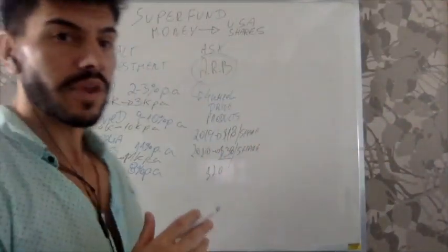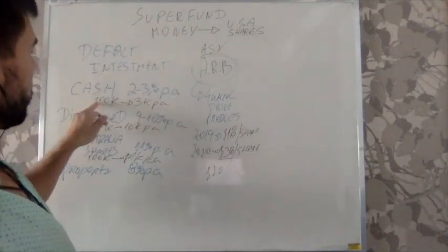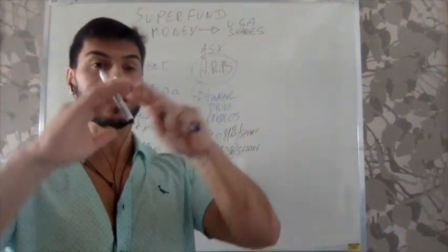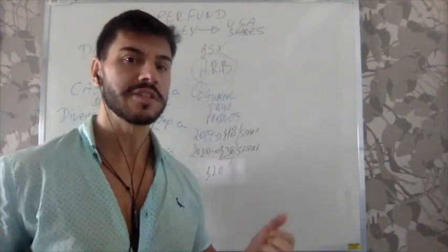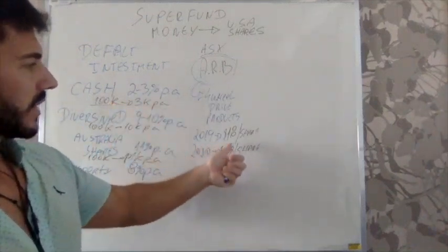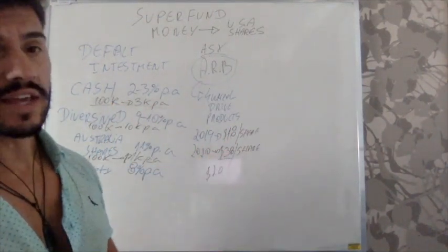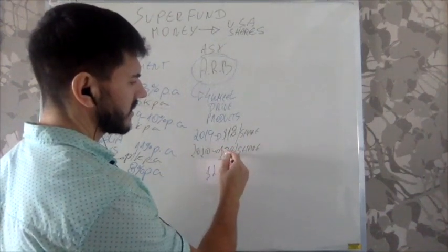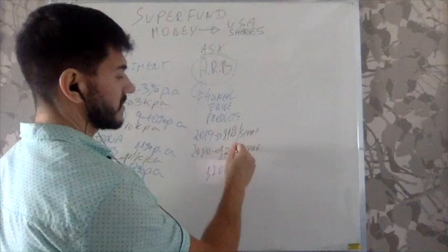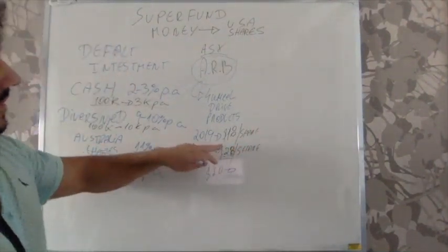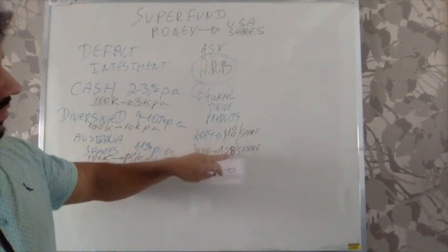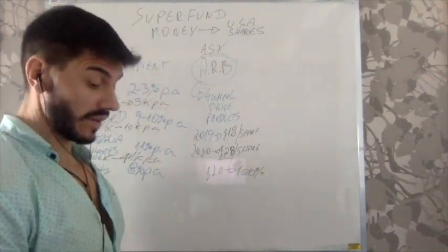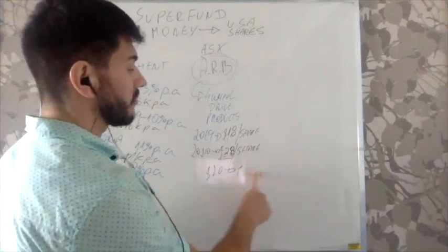That means if you held some shares — let's say 50% of your super fund investment in this company — from $18 to $38 that's a growth of more than a hundred percent. I'm using this as a fictitious example; you don't need to worry about the exact numbers. The key point is that a company can almost double in price, which means a hundred percent increase in share price, or even fifty percent.